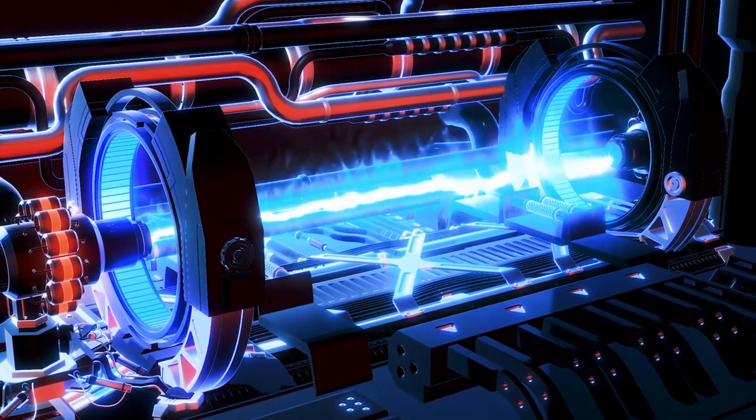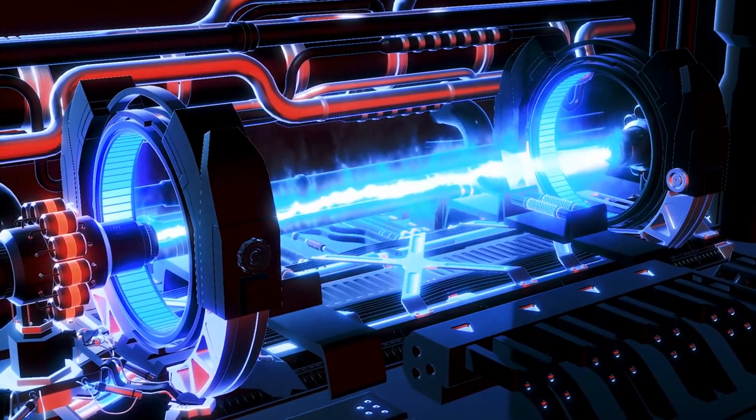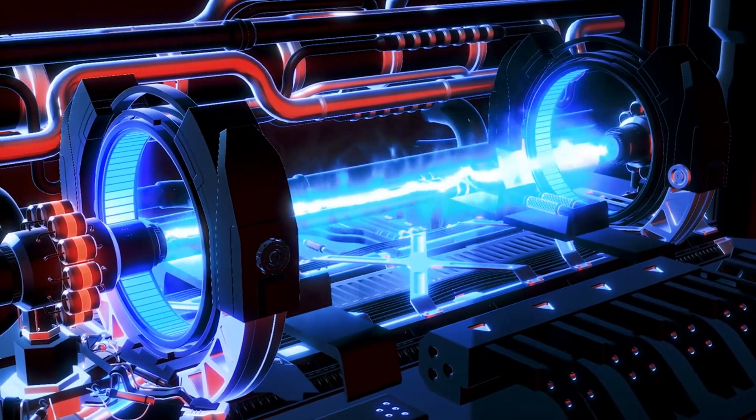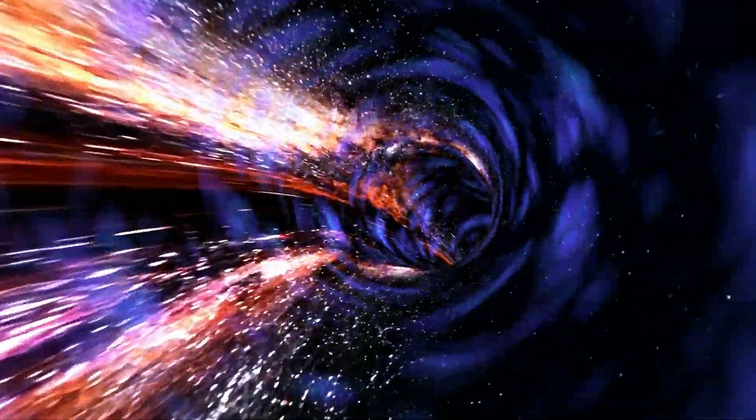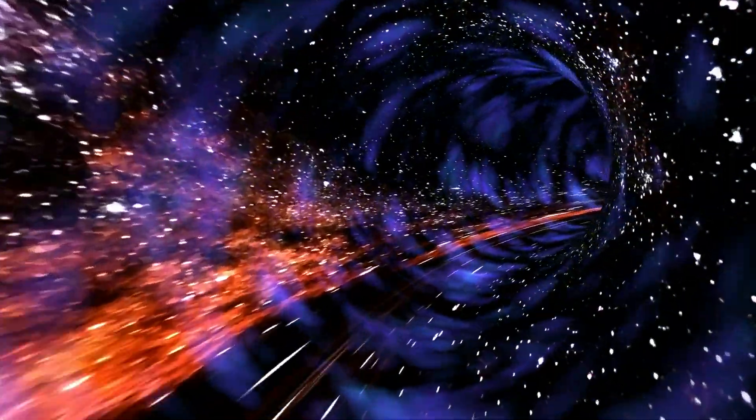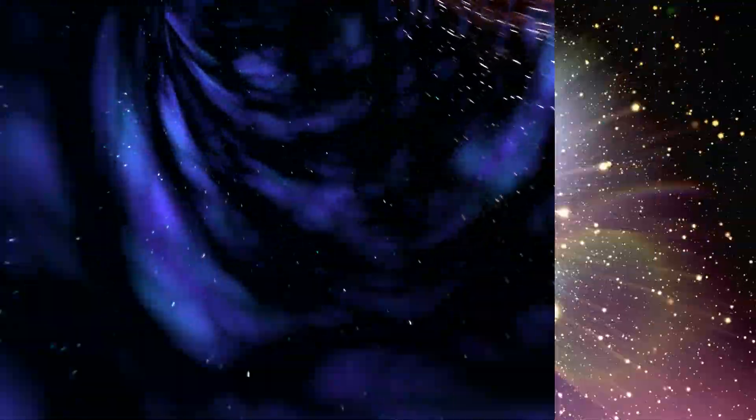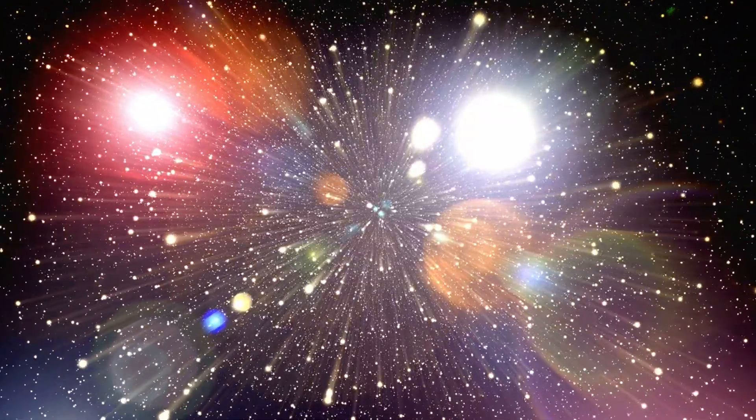The Helical Engine works by continuously altering mass within a vacuum, generating thrust based on special relativity principles. It requires a massive structure over 200 meters in length and a power supply equivalent to running a small city. Space's frictionless environment is key to its effectiveness.